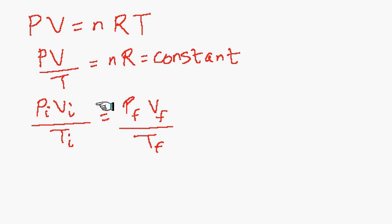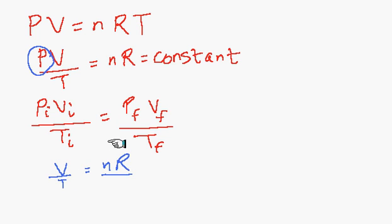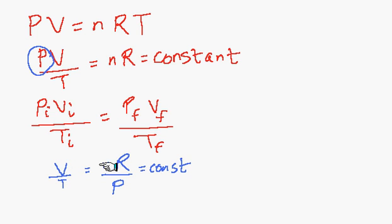In the various processes, you keep any one of these three state variables constant and see how the other two vary with respect to each other. If you keep the pressure constant, that is called an isobaric process. When pressure is kept constant, volume divided by temperature is going to be constant: V by T equals nR by P. So you get a straight line graph if you plot volume versus temperature, with a constant positive slope of nR by P.